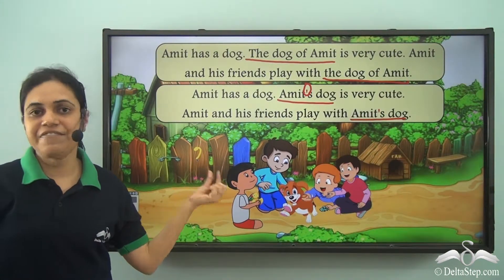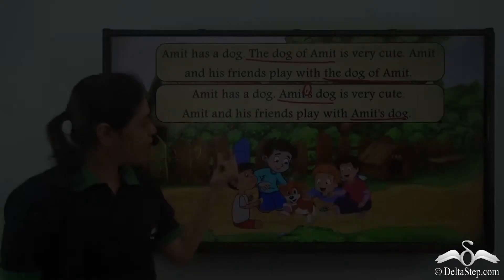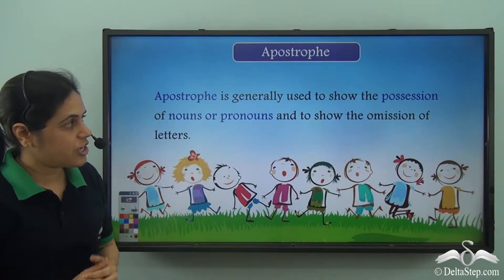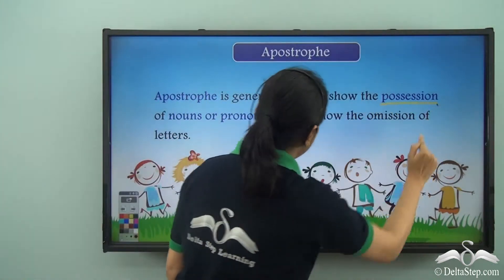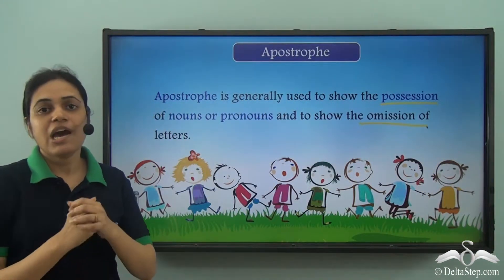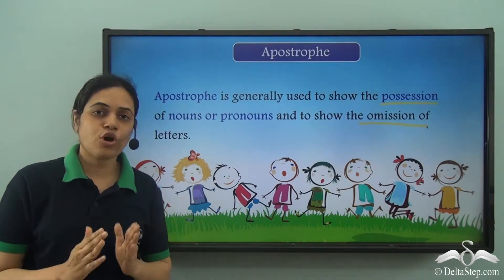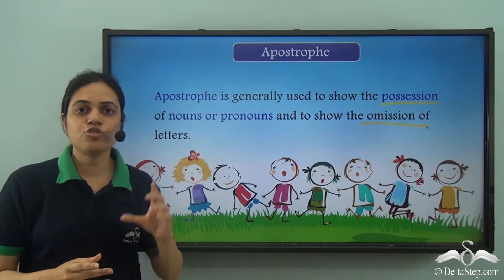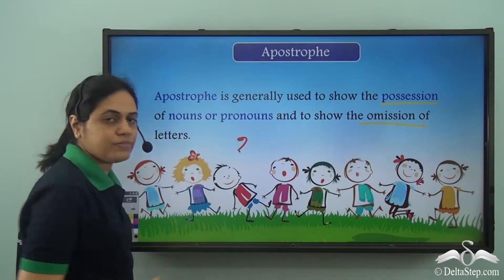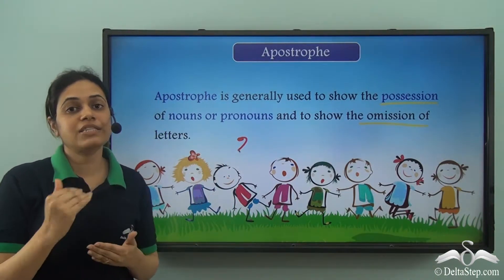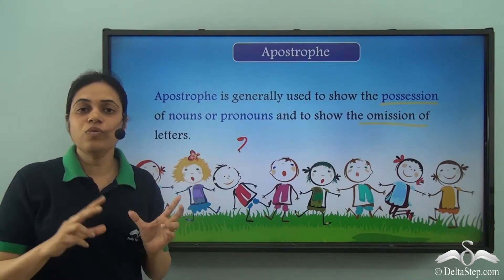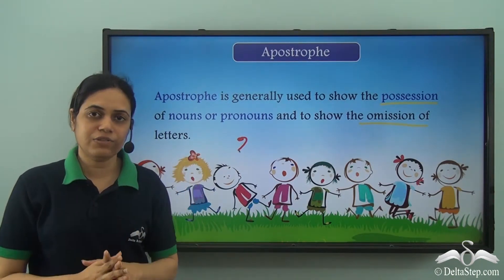Apostrophe looks like a comma, but it is placed at the top. Apostrophe is generally used to show the possession of nouns or pronouns and to show the omission of letters. Apostrophe is also used for short forms — to shorten or make things concise either by showing belonging, like Amit's dog in place of the dog of Amit, or by shortening two words into a single word.